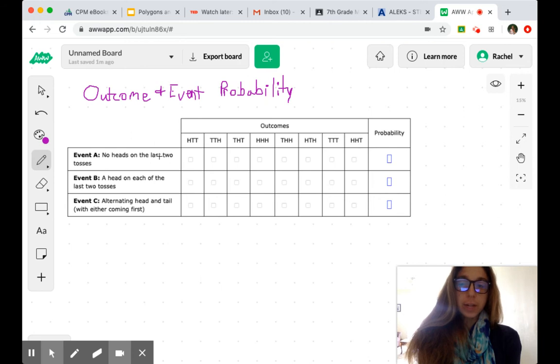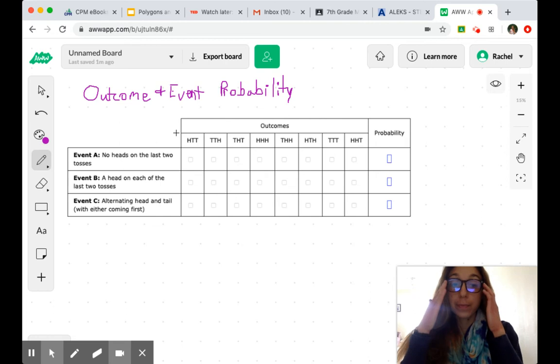So what we're going to do is go through each event and possible outcome and determine what the likeliness or the probability is that that event occurs. What we've got listed here in this table are our events on the side, so what we want to see is going to happen. And then the possibilities, right? Because if you flip three coins, you're going to get some combination of heads and tails in whatever order. Sometimes we care about the order, sometimes we don't. So let's look at these events.